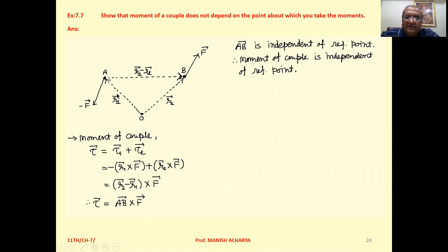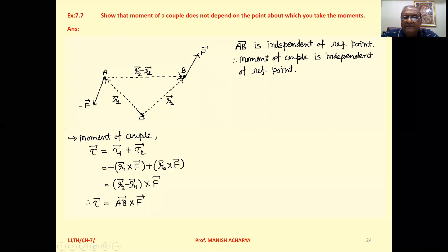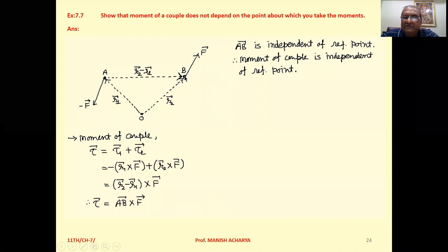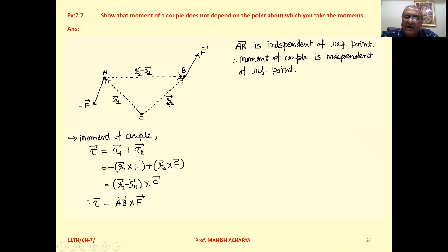Suppose here we consider a reference point that is O. And here with respect to this particular reference point O, there is another point A having position vector R1 and a point B having position vector R2.